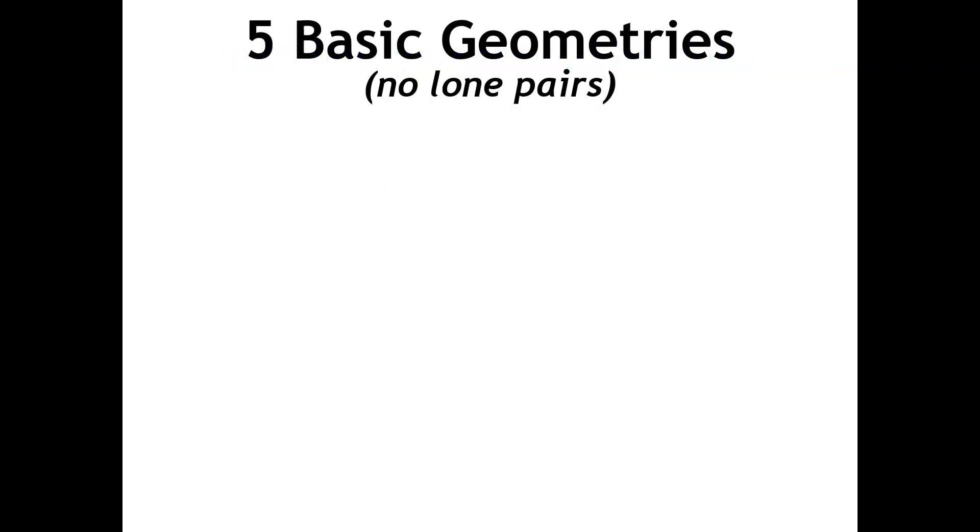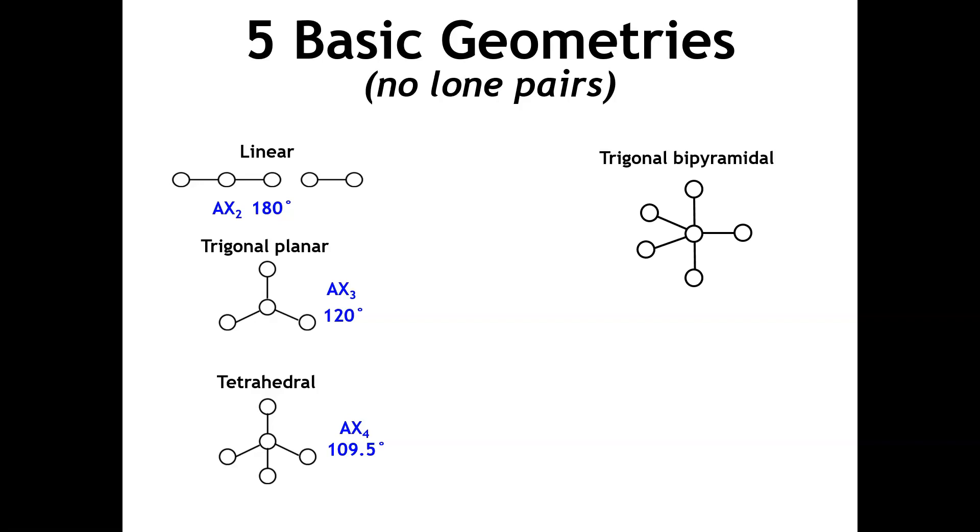There are five basic geometries that have no lone pairs on them: linear, trigonal planar, tetrahedral, trigonal bipyramidal, and octahedral. You may notice that each of these have an AX notation. A represents the central atom, and X represents the terminal atoms. These are five basic geometries that do not have any lone pairs around the central atom.